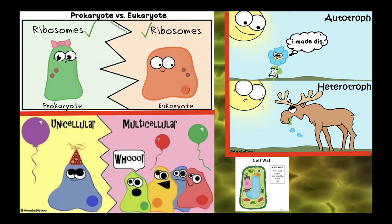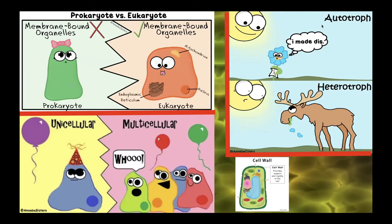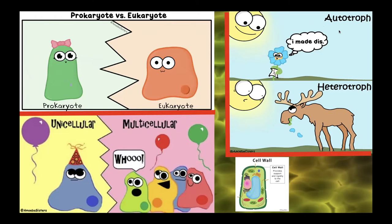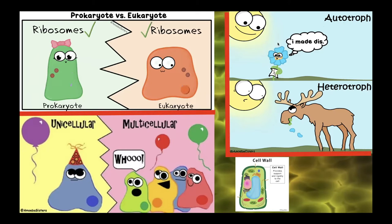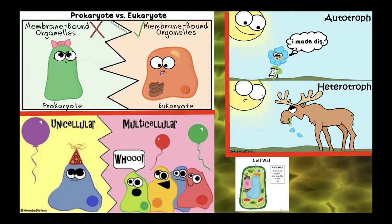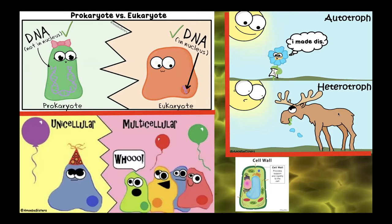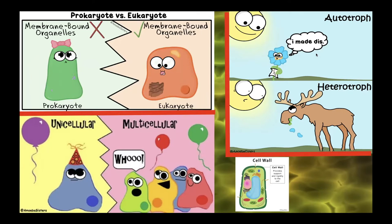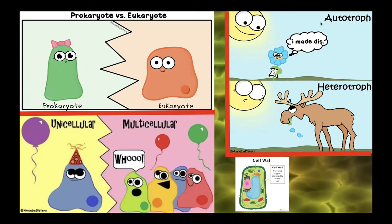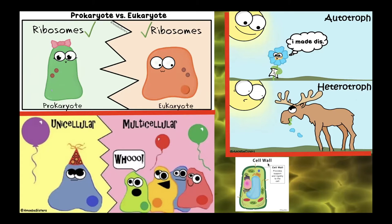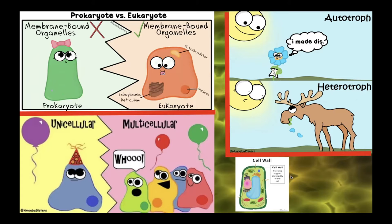For bacteria and archaeobacteria, those are all going to be unicellular. The next vocabulary words are autotrophs versus heterotrophs. Autotrophs—which you may know as producers—are organisms like plants that make their own food via photosynthesis. Heterotrophs are animals and organisms that consume other organisms for energy. For bacteria and archaeobacteria, some are autotrophs and some are heterotrophs depending on the species. We'll also be looking at differences in the cell wall.